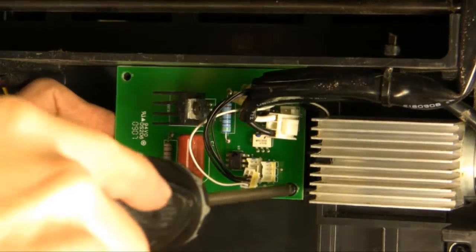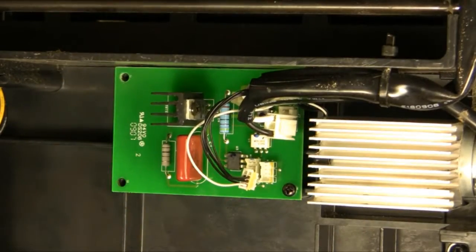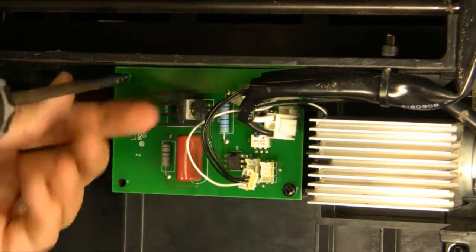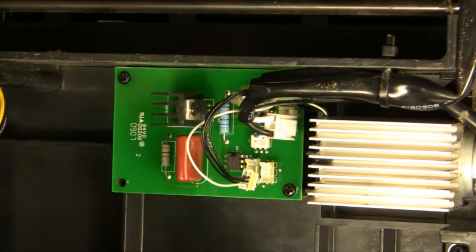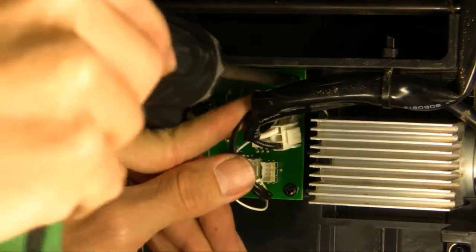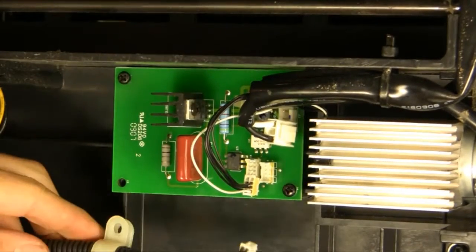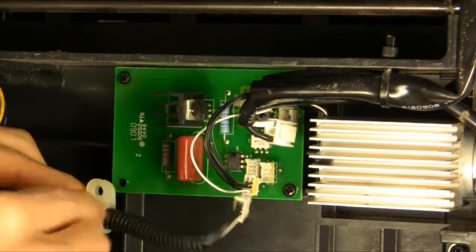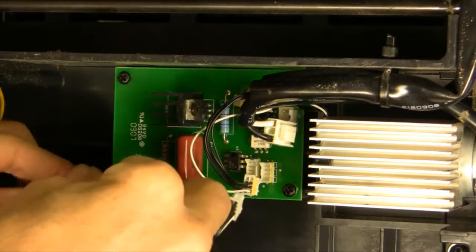You don't want to over torque these screws. We are in a plastic base. The screw on the lower left corner has to go through this wire capture.